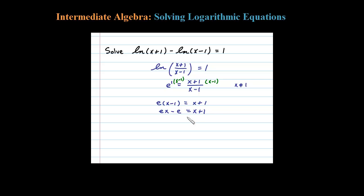What I'm going to do is add e and at the same time subtract x. That'll leave us with e times x minus x equals 1 plus e. I got my constants on one side and my variables on the other side.